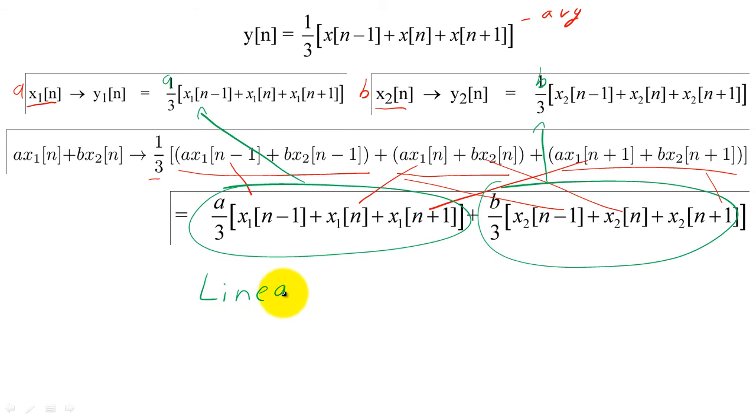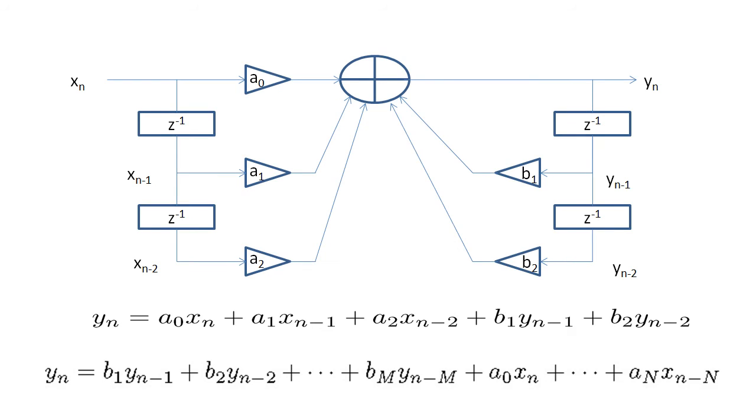In general, if the system equation consists of only adding and multiplying, the system is linear. If the system's equation looks something like this, like our earlier filter, the system is also linear.